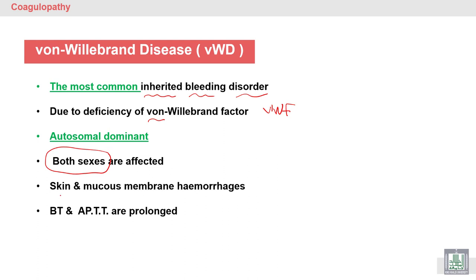In hemophilia, males are affected and females are carriers, whereas in Von Willebrand disease, both sexes are affected because it is autosomal. Hemophilia causes joint bleeding, while Von Willebrand disease causes skin and mucous membrane bleeding. In Von Willebrand disease, both aPTT and bleeding time are prolonged, because Von Willebrand factor mediates platelet interaction with subendothelial collagen.